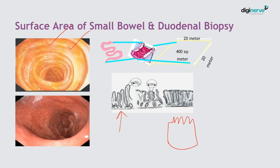Valvulae conniventes increase the surface area of the bowel; villi provide finger-like projections further increasing the surface area; and each epithelial cell has multiple projections called microvilli. If you straighten the small bowel, the total area would be 400 square meters, which greatly increases the absorptive ability of the small bowel.